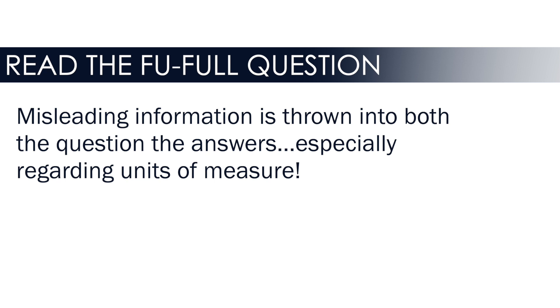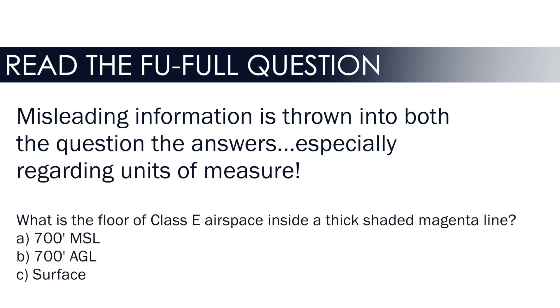The second tip — one of my favorites from the military — is RTFQ: read the question. Read the entire question. The FAA loves to trick people with double negatives and providing two similar answers with different units, and paying attention to units of measure is especially important. If the question asks when does Class E airspace start inside of a thick shaded magenta line, and the first choice is 700 feet MSL — it's easy to see that 700 and pick it. But that's incorrect. If you'd read on to the second answer, you'd see 700 feet AGL, which is the correct choice.